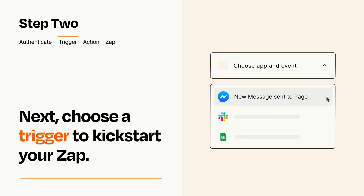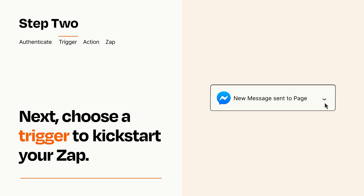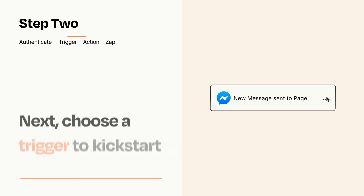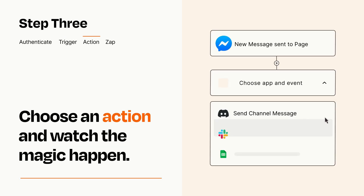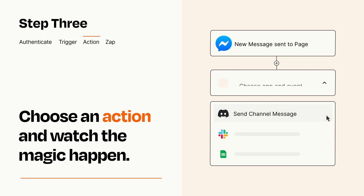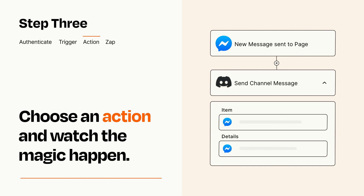When you set up this step, your Zap will pull in test data from your trigger app that you'll see later when setting up your action app. This last part is where the magic happens. Choose the action you want to happen in your target app. You'll see a bunch of fields where you can specify the details of your Zap. You can type free form text or pull data in from your trigger step as needed.